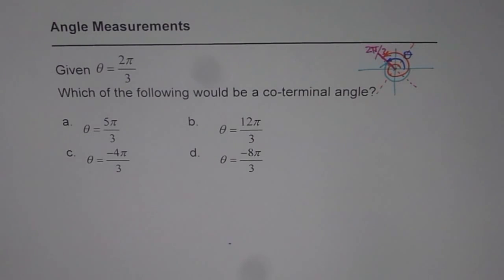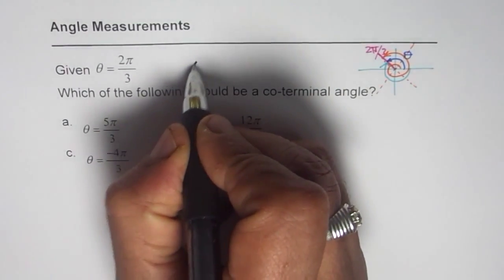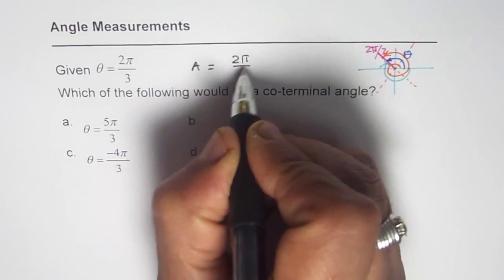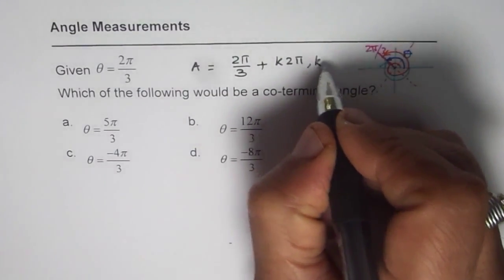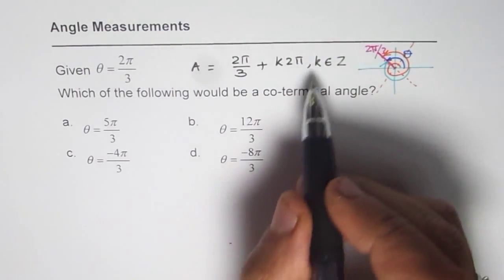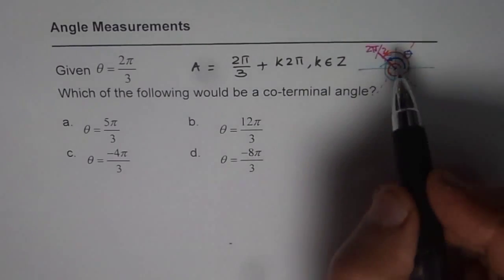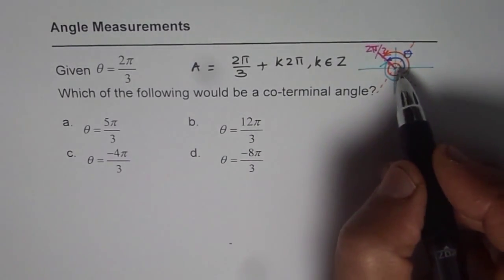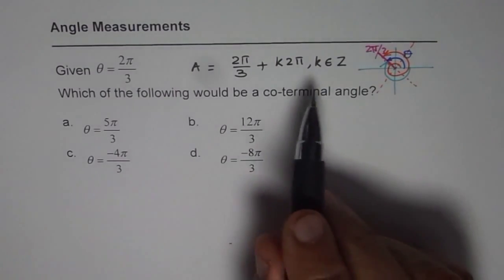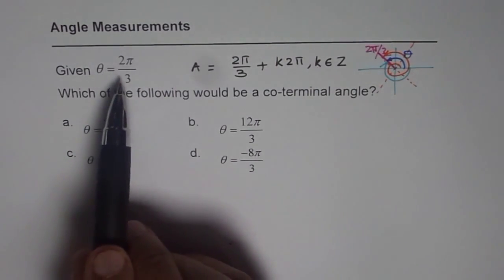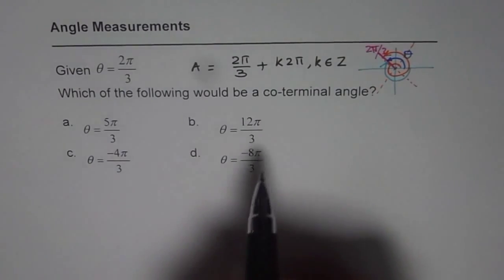Mathematically, we can write the co-terminal angle as: angle A equals 2π/3 plus k times 2π, where k belongs to the integers — k could be ±1, ±2, ±3, and so on. That gives you the co-terminal angle. One full circle is 2π, so you could go counterclockwise adding 2π or clockwise subtracting 2π. Basically, you add or subtract multiples of 2π to get the co-terminal angle.